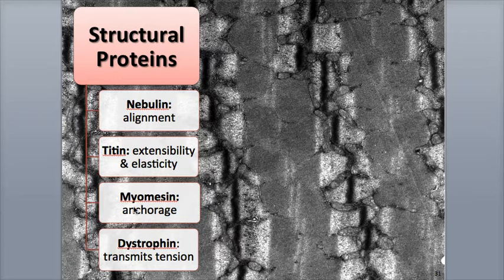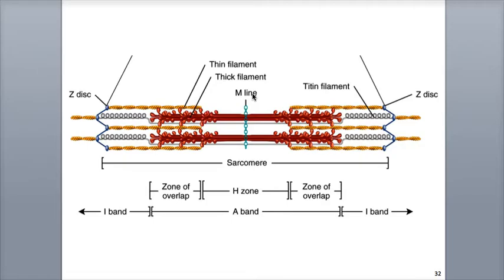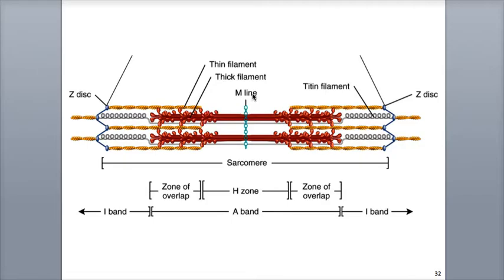The structural protein myomesin makes up the M-line, which attaches to the thick filaments and titin, securing them both in the middle of the sarcomere and helping to keep the thick filaments properly aligned.